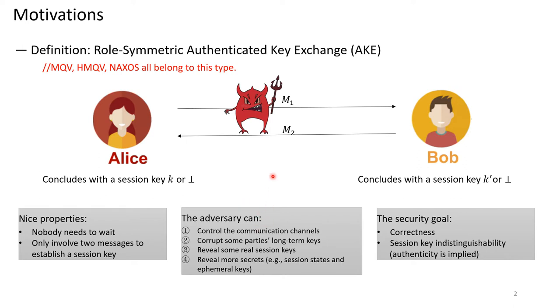There is an adversary between them. It can control the communication channels, corrupt some party's long-term keys, reveal some real session keys, and reveal some secrets like session states and ephemeral keys. The security goal includes correctness and session key indistinguishability.